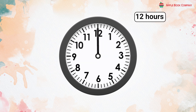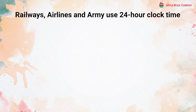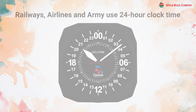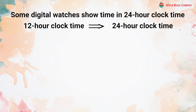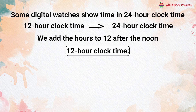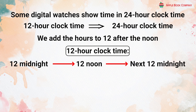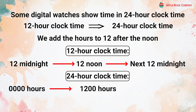24-hour clock time. A clock has 12 hours but it does not show morning or evening. Therefore, railways, airlines, and the army use 24-hour clock time. Some digital watches also show time in 24-hour clock time. To convert 12-hour clock time to 24-hour clock time, we add the hours to 12 after noon. In 24-hour clock time: 12 midnight = 0000 hours, 12 noon = 1200 hours, and the next 12 midnight = 2400 hours.